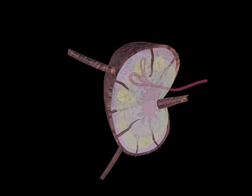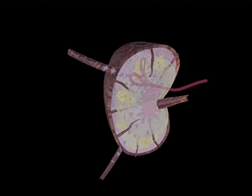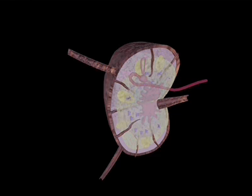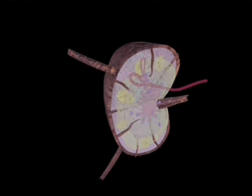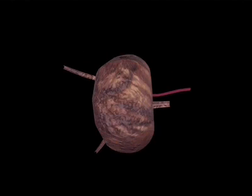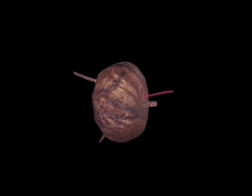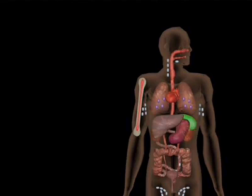Dendritic cells will come in through the tissue, entering through the efferent lymphatics, and will go to the T-cell areas. If an antigen comes into the node, either presented by a macrophage or dendritic cell, an immune response takes place with proliferation and activation of responding cells. The lymphocytes will then come out of the lymph nodes and go to the area of infection as effector cells or as memory cells to other lymphoid tissues.